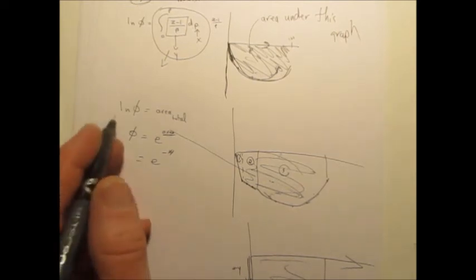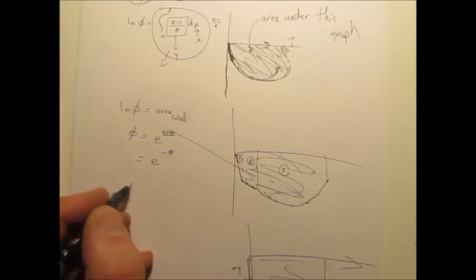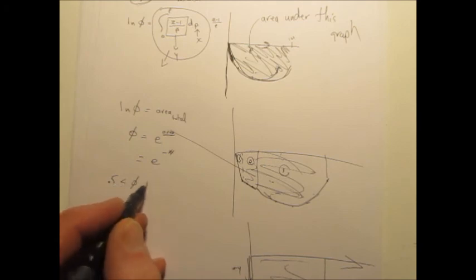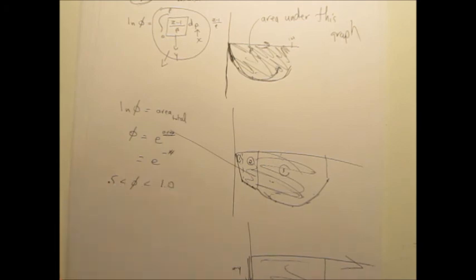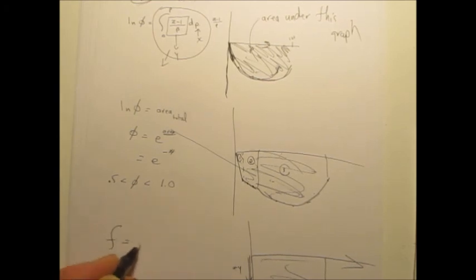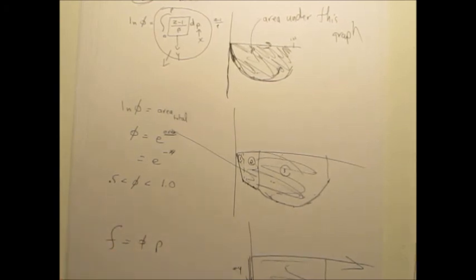The answer for phi is - make sure that your phi is somewhere in the range, I won't give you the exact number, but it's somewhere between 0.5 and 1. If you're outside that range, you know that something went horribly wrong. But that gives you phi, and then the fugacity would just be phi times the pressure. So that is question five.